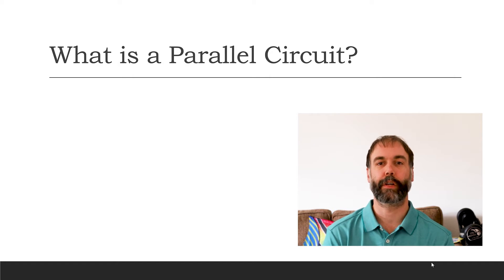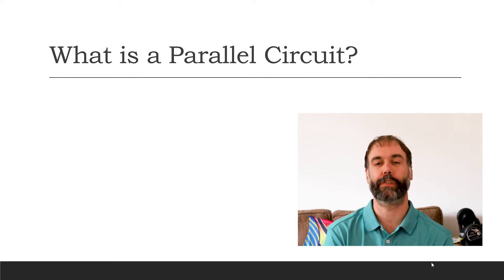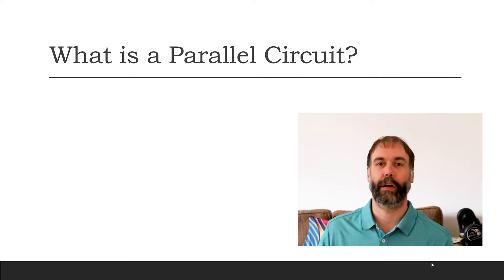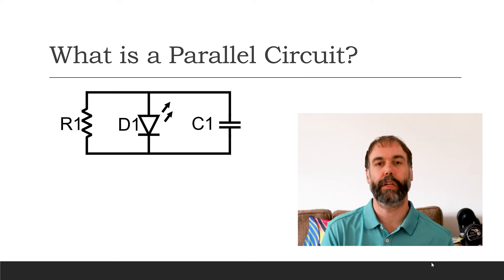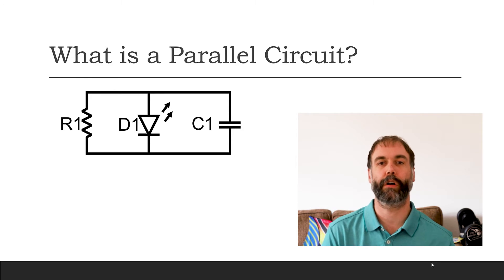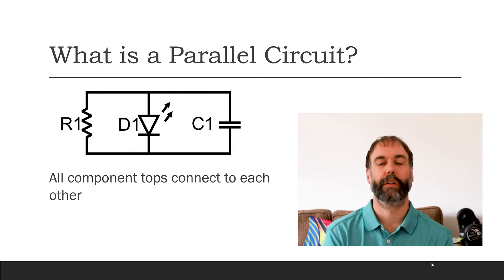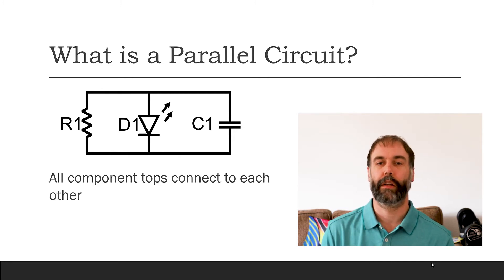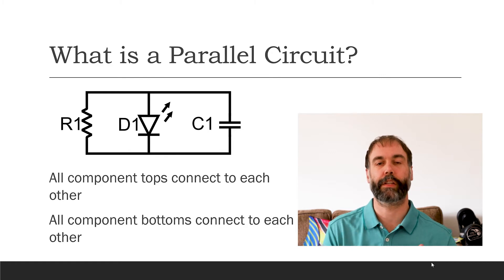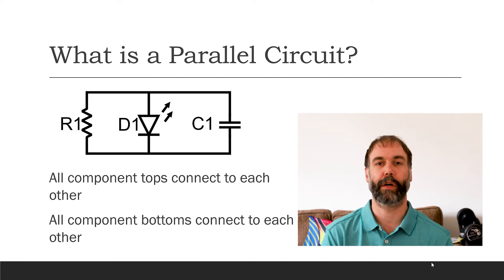So what is a parallel circuit? In common usage, parallel means side-by-side, and that applies to circuits as well. This is an example of parallel components in a circuit — you can see that the resistor, the diode, and the capacitor are all side-by-side. Specifically, when we're talking about circuits, the start of every component has to be connected to the start of every other component, and the end of every component has to be connected to the end of every other component, in order for it to truly be a parallel circuit.